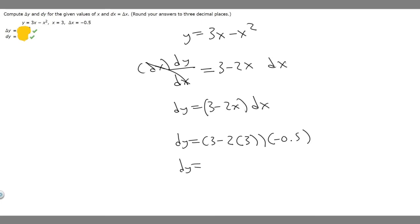So dy equals 3 minus 2 times 3, which is 6. So 3 minus 6 is the same thing as minus 3, then multiplied by basically minus 1 half. So this is just going to become 1 half of 3, which is 1.5. So dy is going to be equal to 1.5.